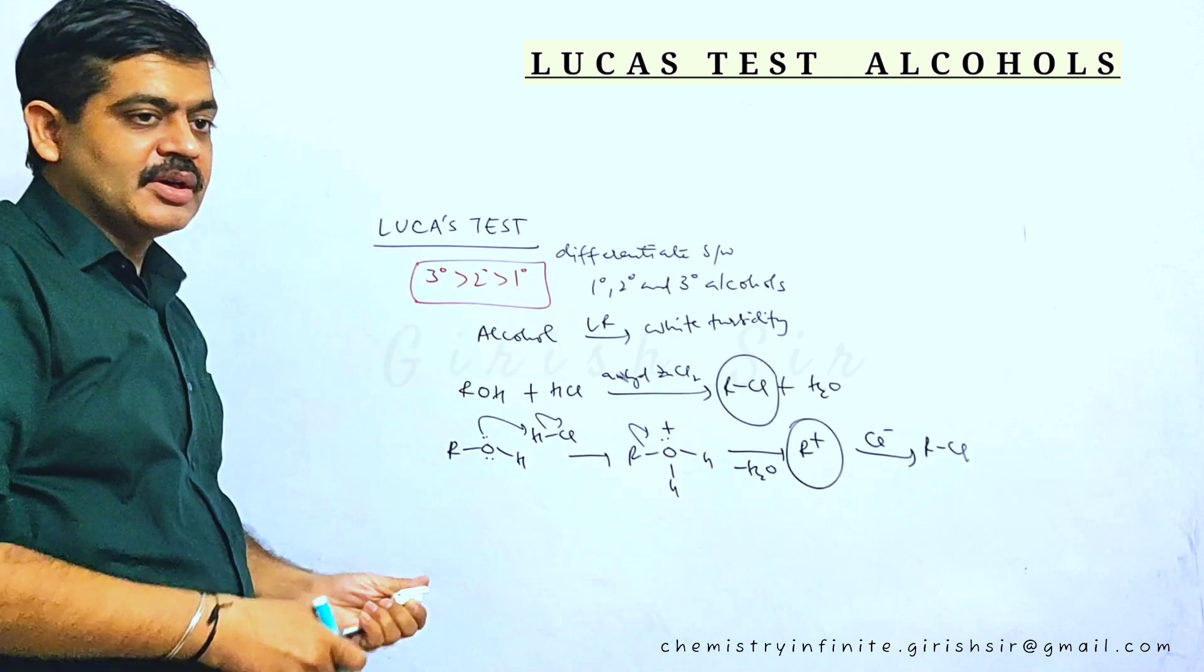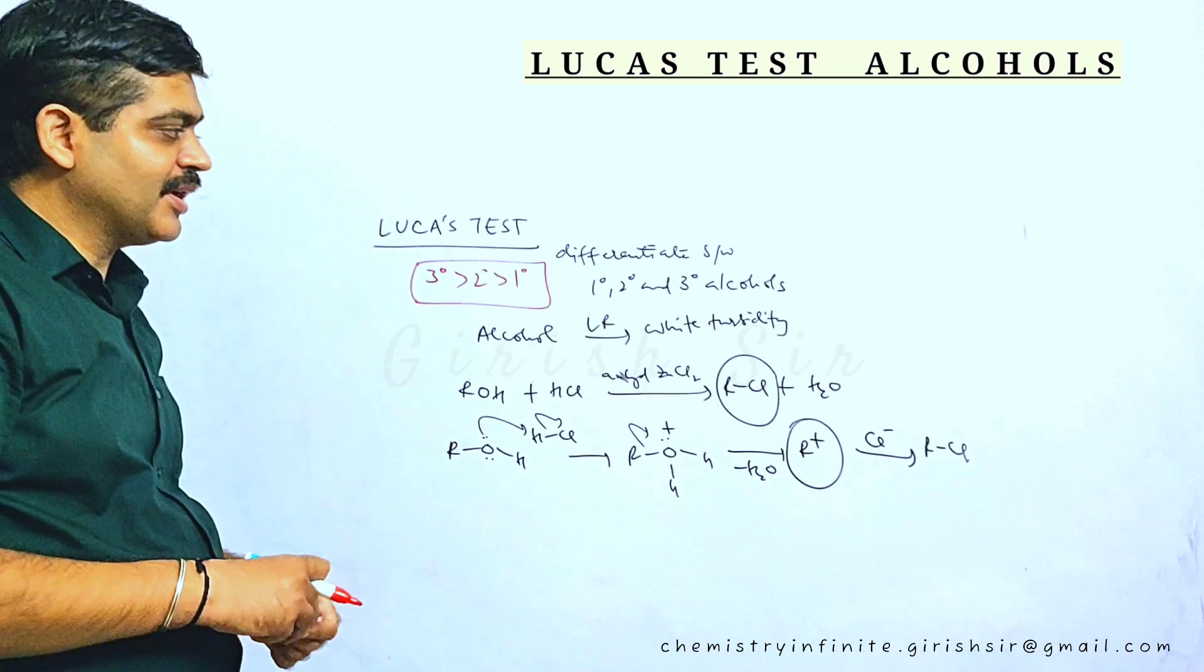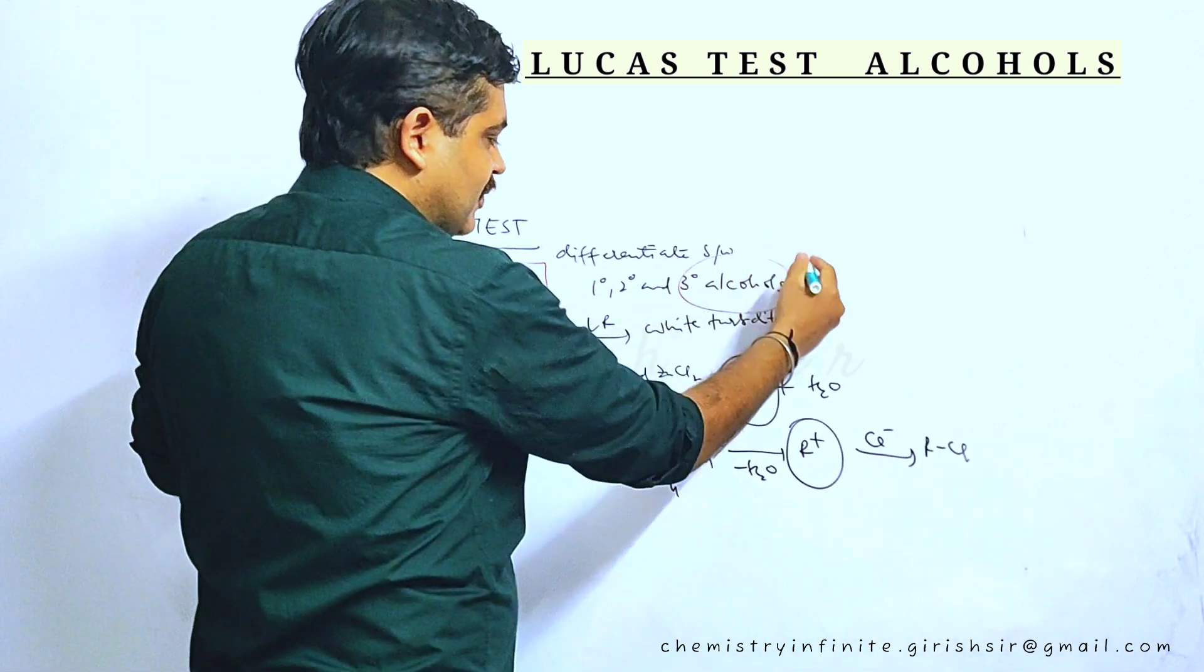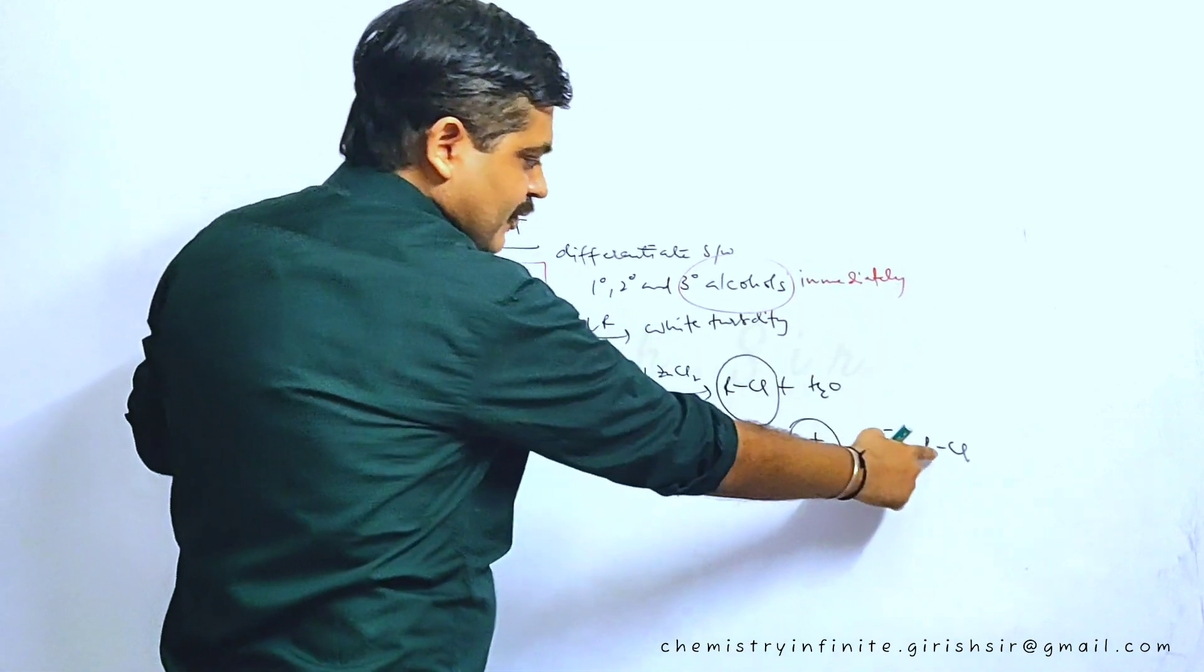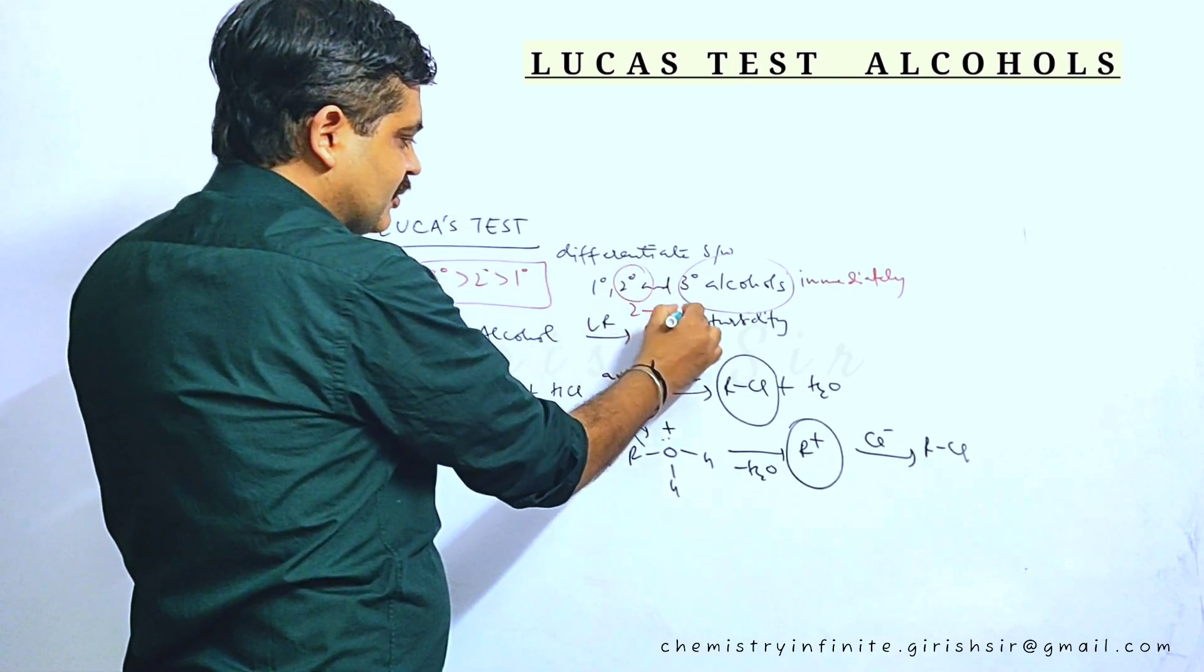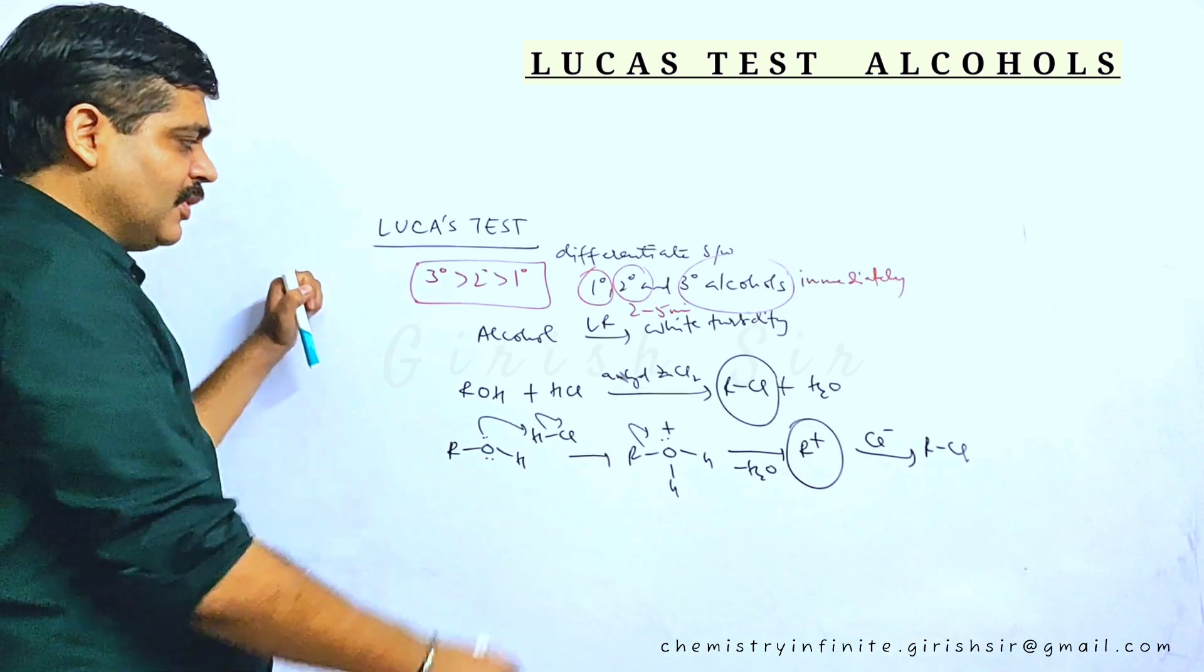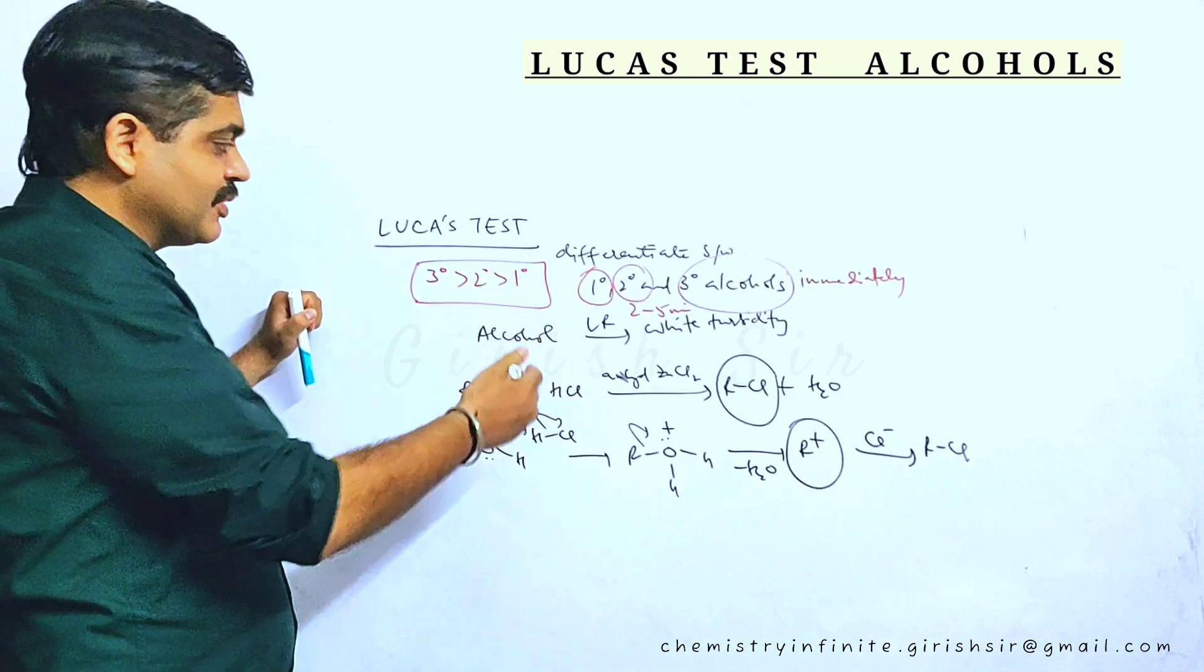So formation of 3 degree carbocation should be the fastest, which implies if we have 3 degree alcohol it will react the fastest. So 3 degree alcohols give turbidity immediately due to formation of alkyl chloride. 2 degree alcohols generally take 2 to 5 minutes. Whereas 1 degree alcohols generally give turbidity only on warming or it may take longer than 5 minutes.